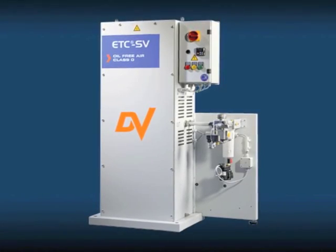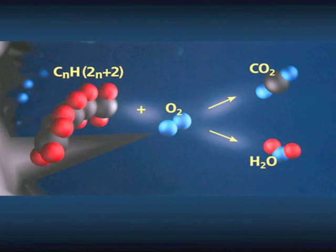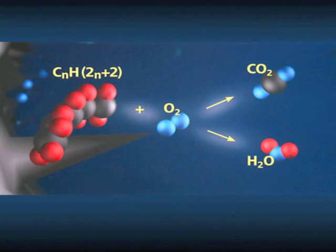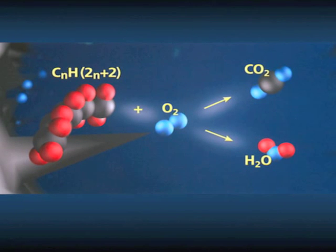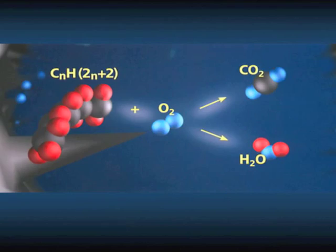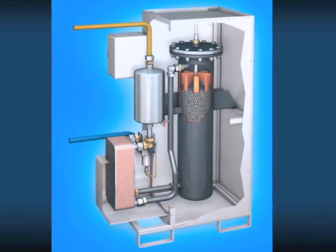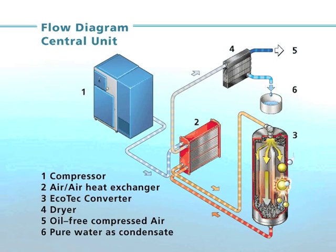The EcoTech converter uses a patented catalytic process to convert oil aerosols into water, carbon dioxide, and nitrogen, which are natural compounds of the atmosphere. The EcoTech converter is integrated on the downstream of the compressor, for example installation directly at the point of use.